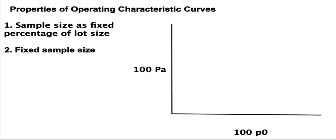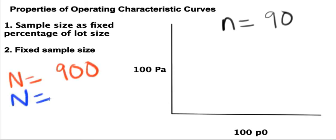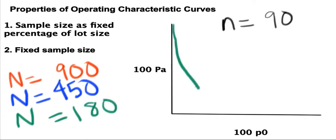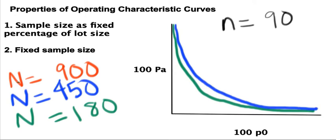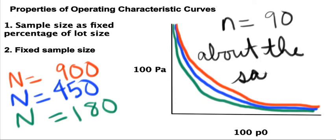Let's look at the second property of OC curves, in which case we're looking at a fixed sample size. Let's consider a fixed sample size of 90, looking at lot sizes of 900, 450, and 180. As you can see in this example, the curve shape is very similar when we have a fixed sample size.